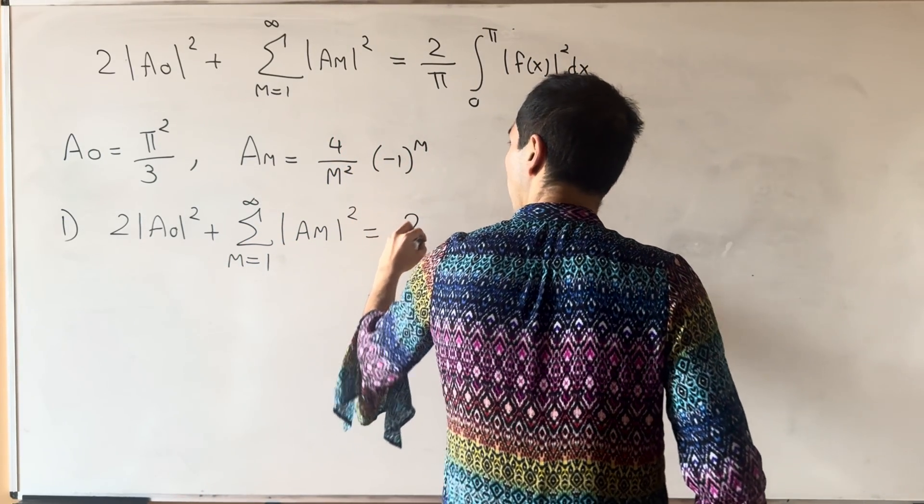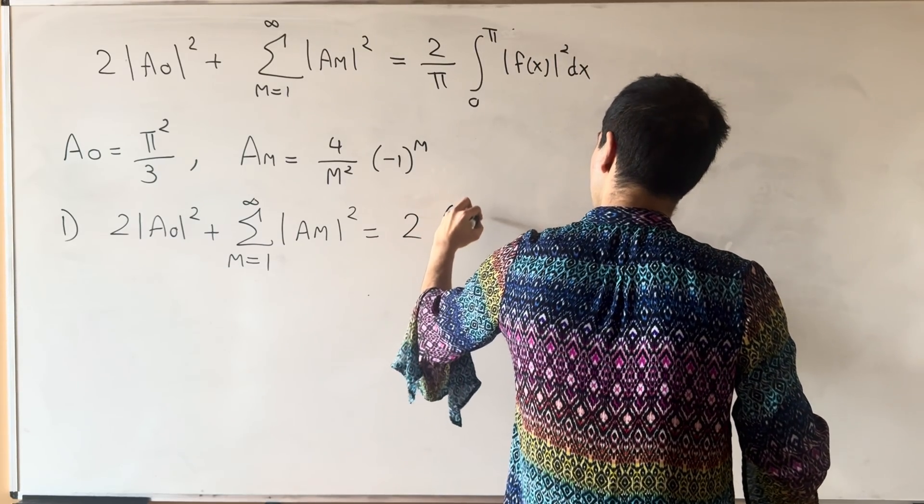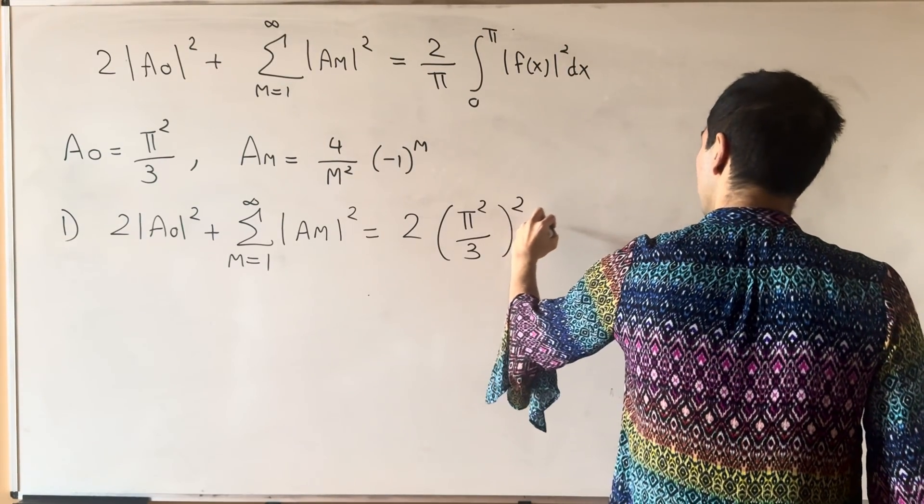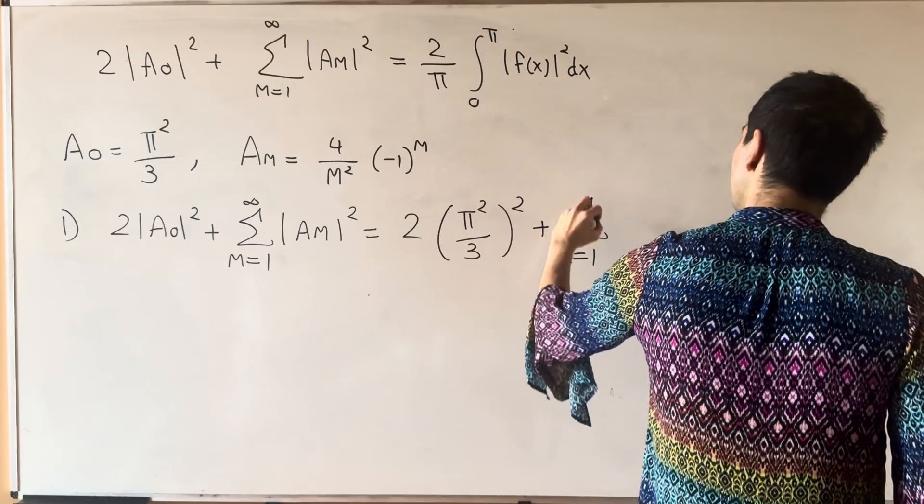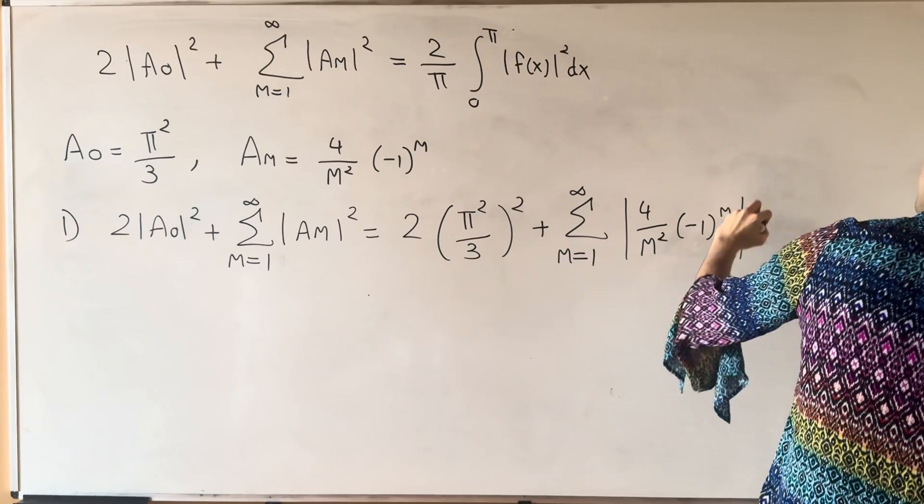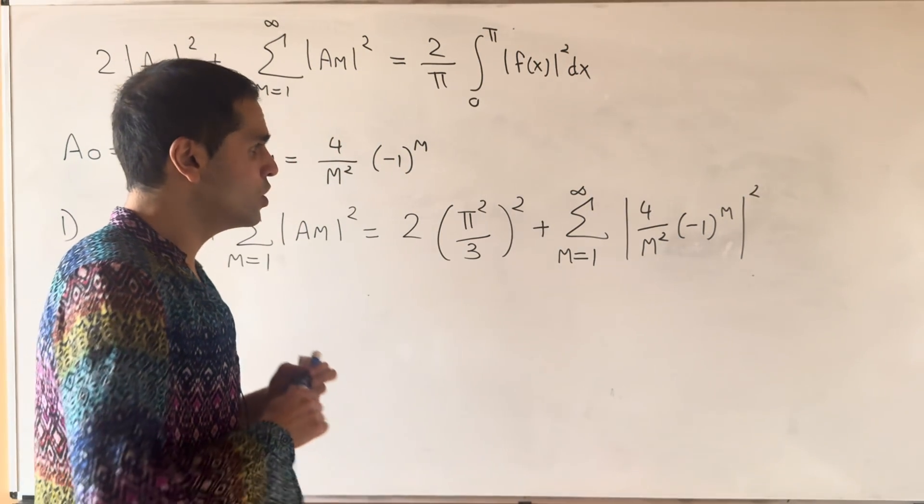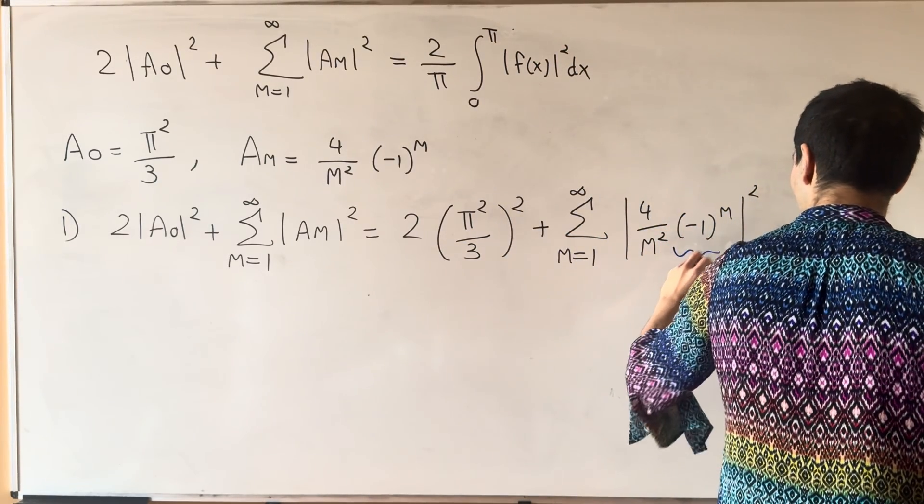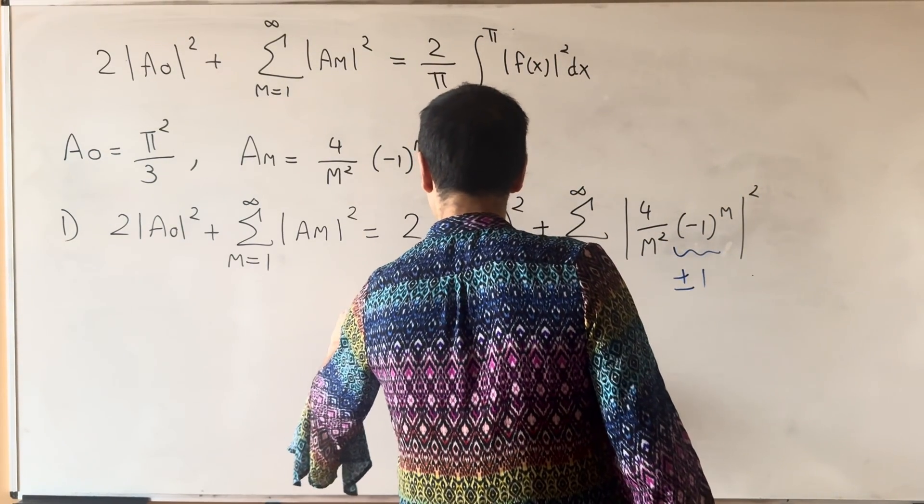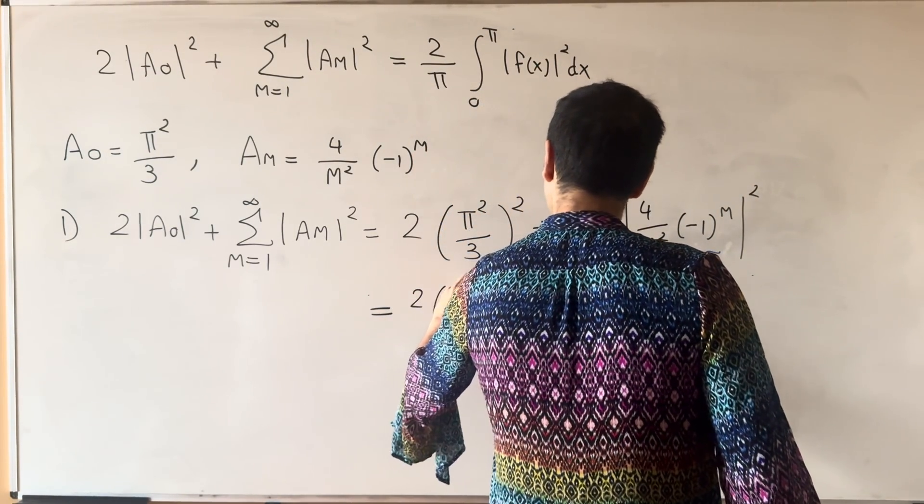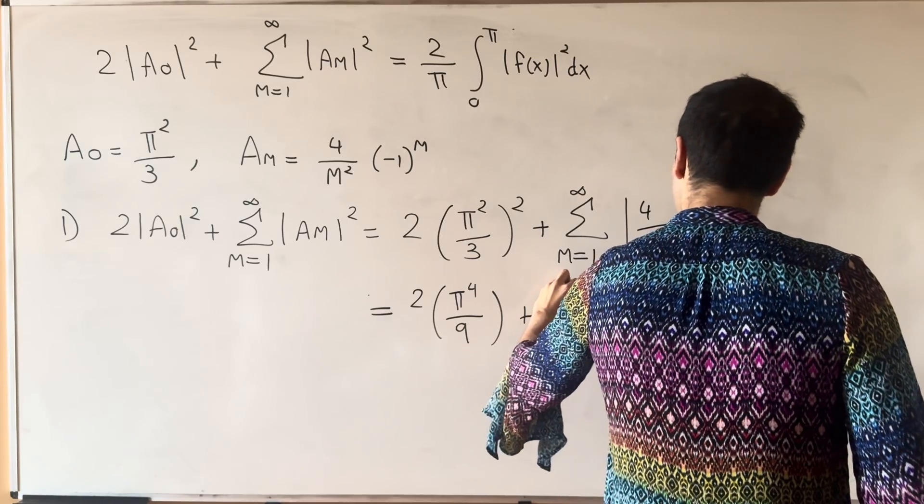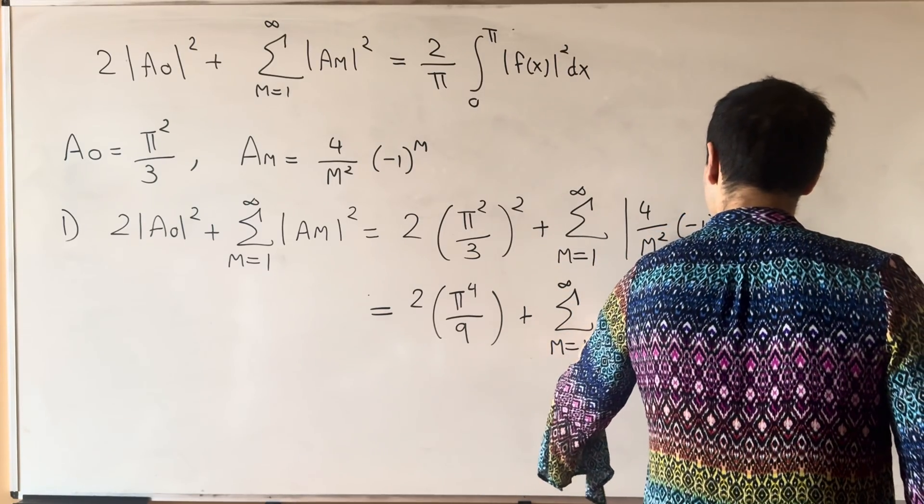So that becomes 2 times pi squared over 3 squared. So it's already positive, so we can remove the absolute value plus the sum from 1 to infinity of 4 over m squared minus 1 to the m squared. Once again, minus 1 to the m is just plus minus 1. And so if you square this, you get 1. And so what we're left with is 2 times pi to the 4th over 9 and then plus the sum from 1 to infinity of, I believe, 16 over m to the 4th.